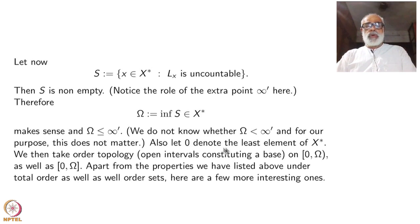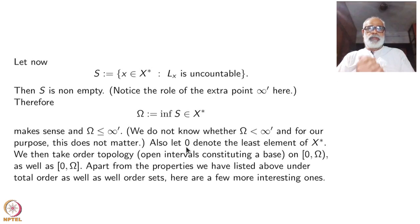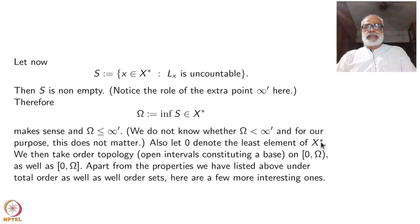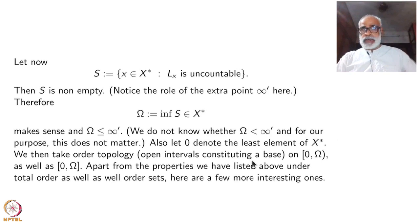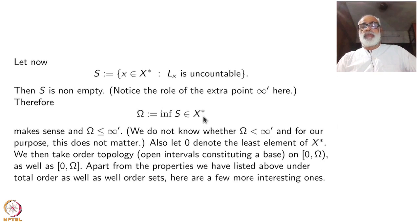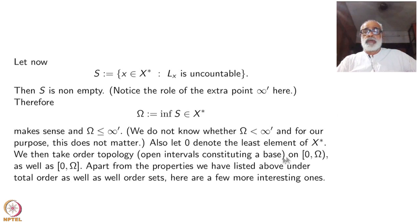Let 0 denote the least element of X*. We then take the order topology — open intervals constituting a base — on [0, Ω) as well as [0, Ω]. Both of them are subsets of X* and are themselves well-ordered. So we can take the order topology on both [0, Ω) and [0, Ω]. Clearly, capital Ω will be in the closure of [0, Ω).